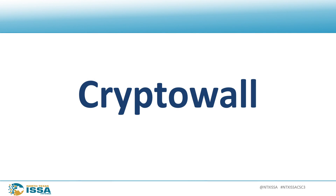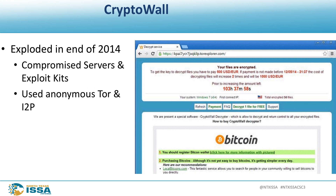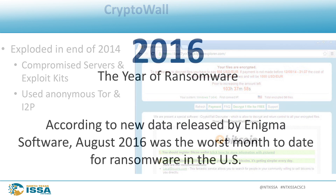Next comes CryptoWall, which came about in 2014. It started using compromised web servers and exploit kits instead of DGAs. What's interesting is how it communicated back to the bad actors — they started using anonymous services called Tor, the Onion Router, or I2P to mask their tracks back to the malicious servers.